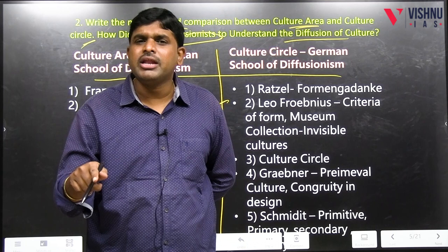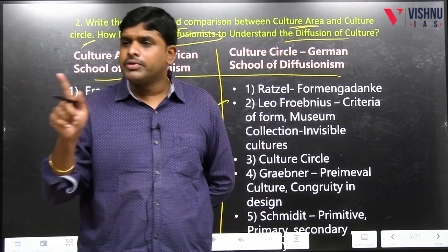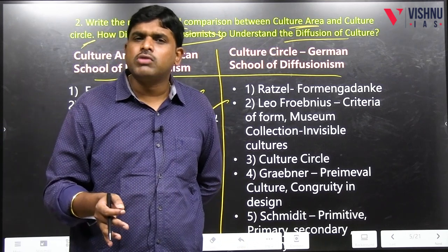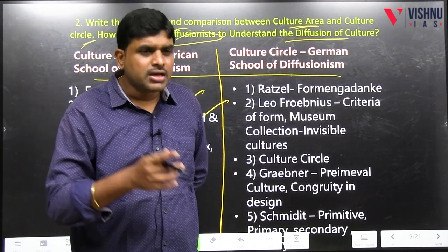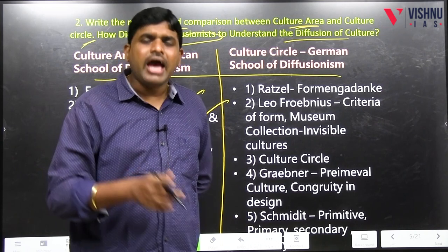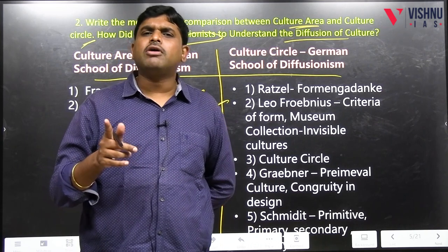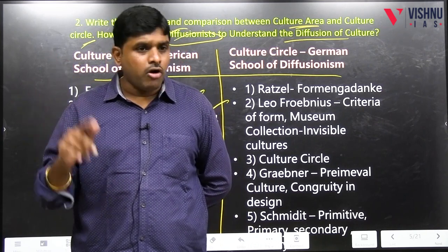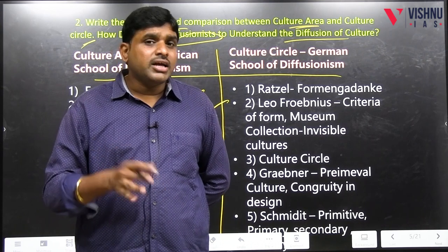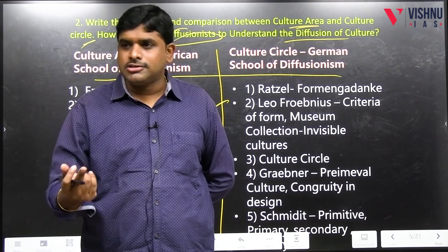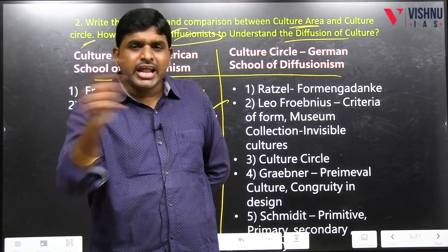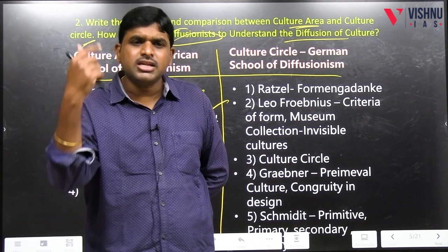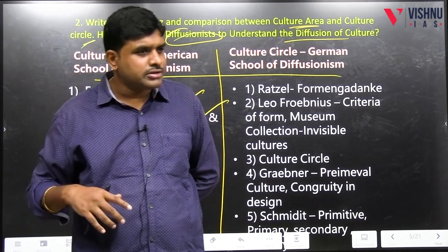The first proponent of the German school of diffusionism is Ratzel, who gave the concept called 'Form and Gedanke' — which is called criteria of form. Essential and unessential aspects: if they are present in two geographies, it means there is diffusion.